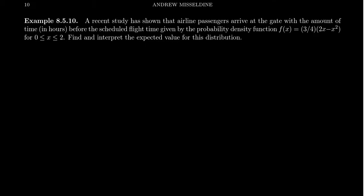Let's look at one more example we haven't seen before. A recent study has shown that airline passengers arrive at the gate with the amount of time measured in hours before the scheduled flight time given by the probability density function f of x equals 3 fourths times 2x minus x squared from 0 to 2. People show up anywhere from 0 to 2 hours before the flight. What is the expected value?